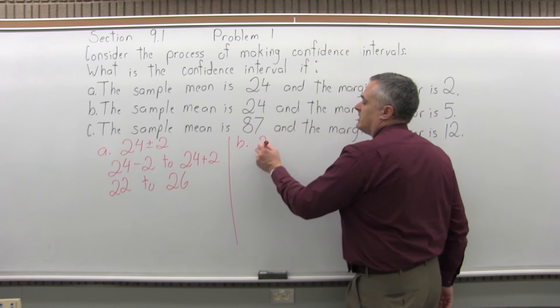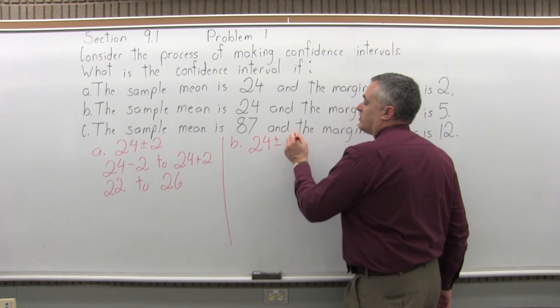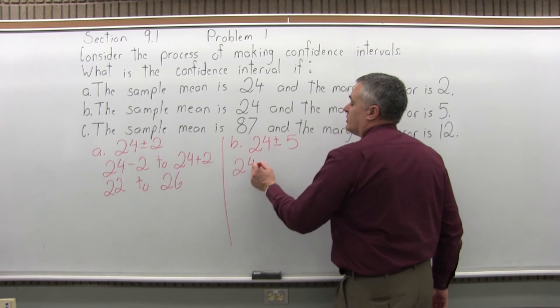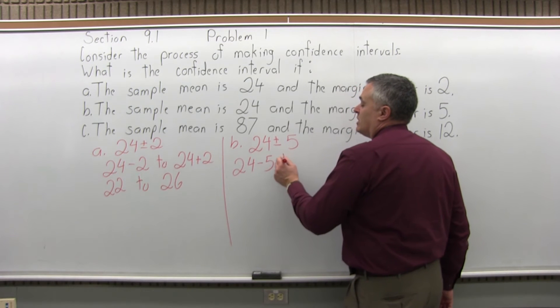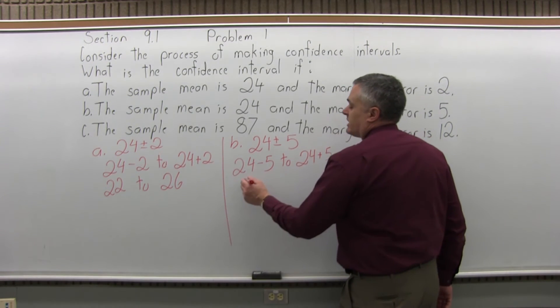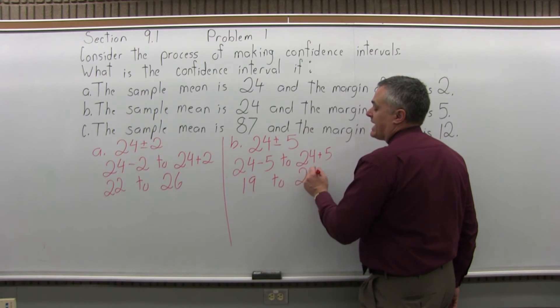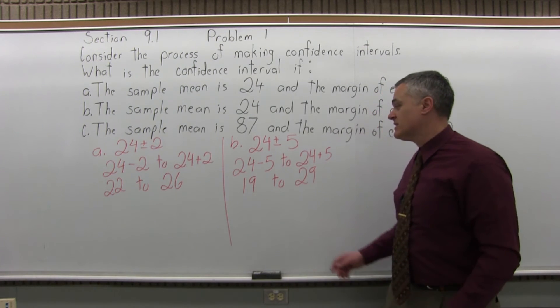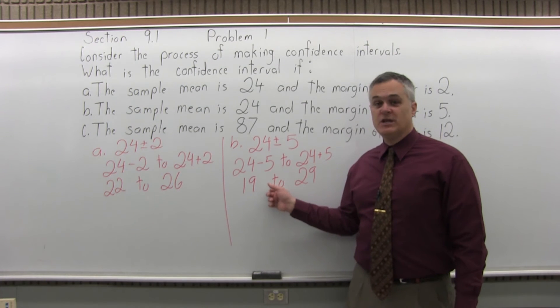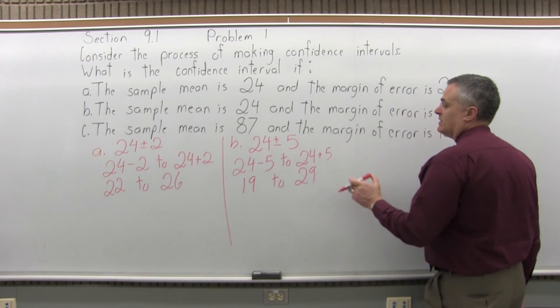So same sample mean, a little bit bigger margin of error. So it's going to be the sample mean 24 plus or minus the margin of error, which is 5. So your confidence interval will go from 24 minus 5 to 24 plus 5. So that will go from 19 to 24 plus 5 is 29. So your confidence interval in this case for part B would go from 19 to 29. You're fairly sure that the mean of the population is somewhere in that interval from 19 to 29.